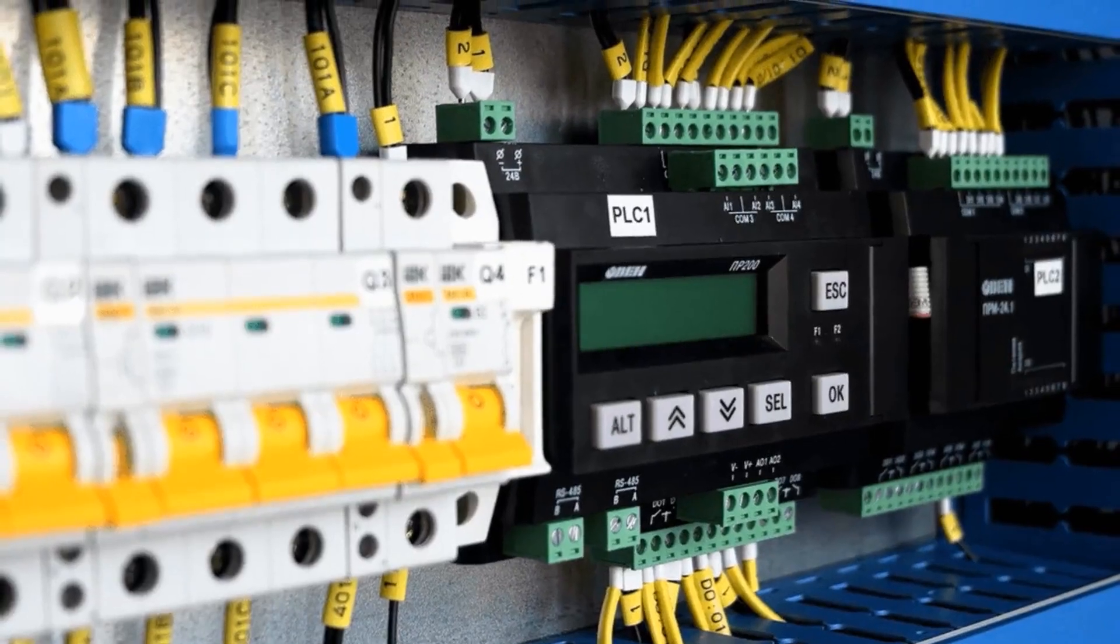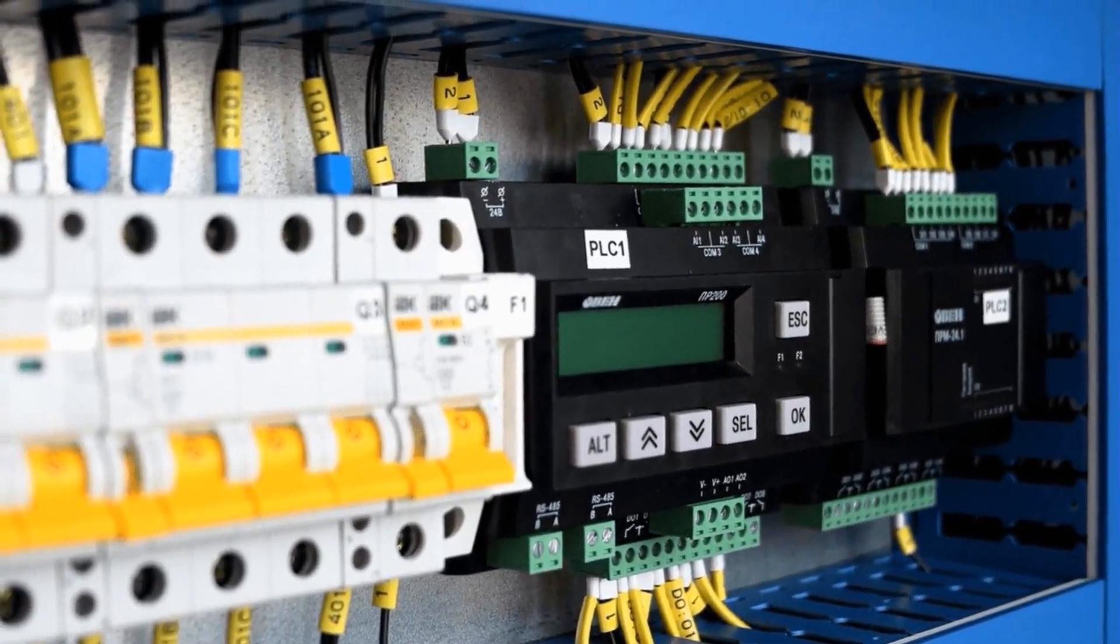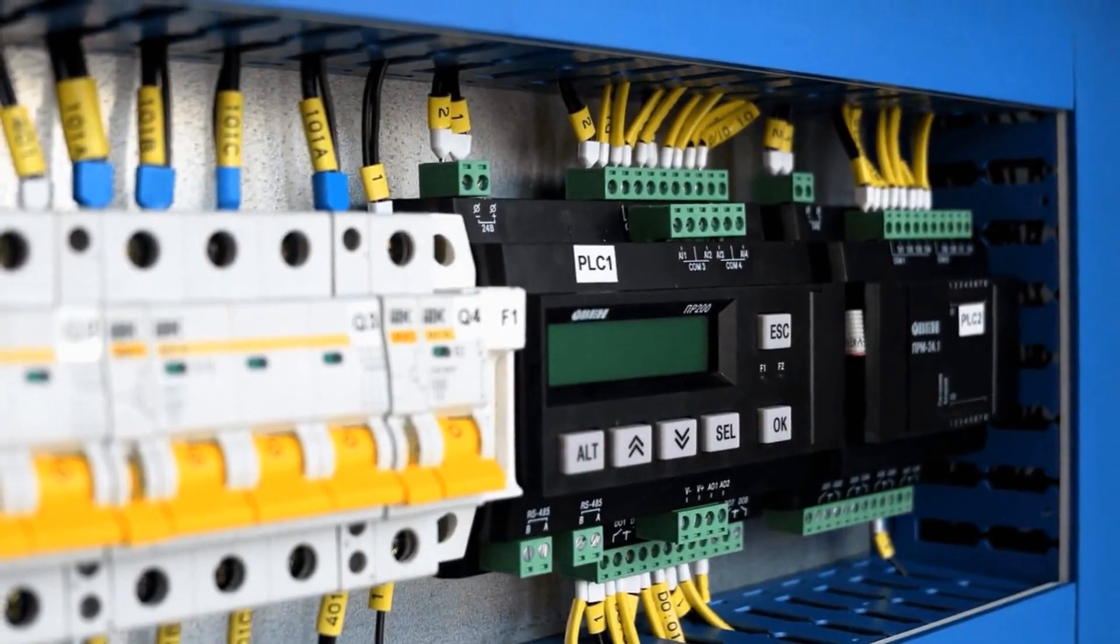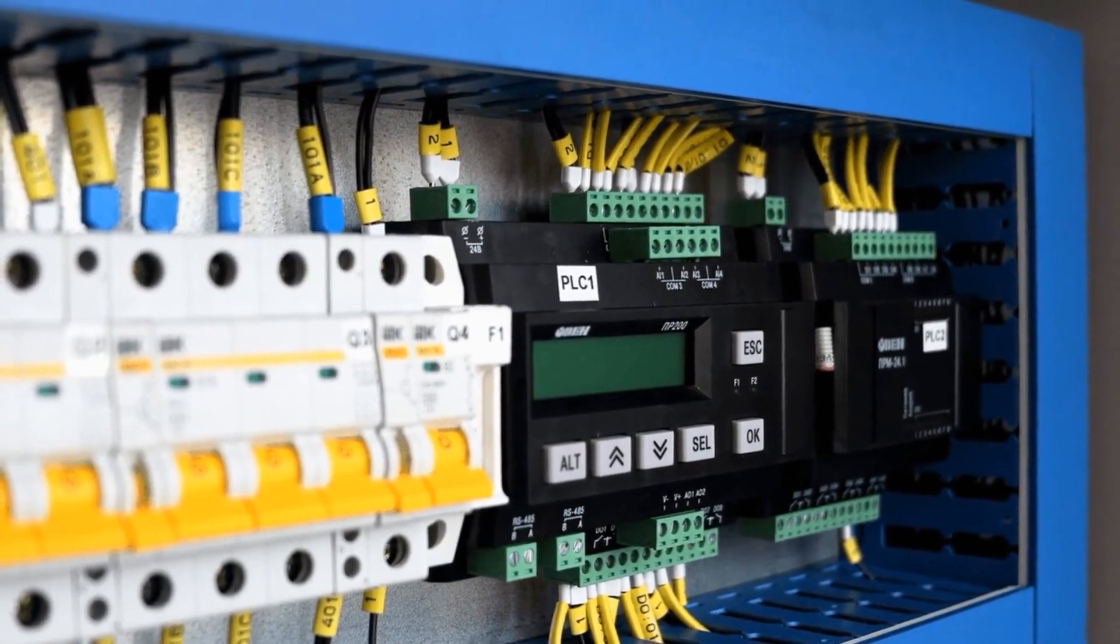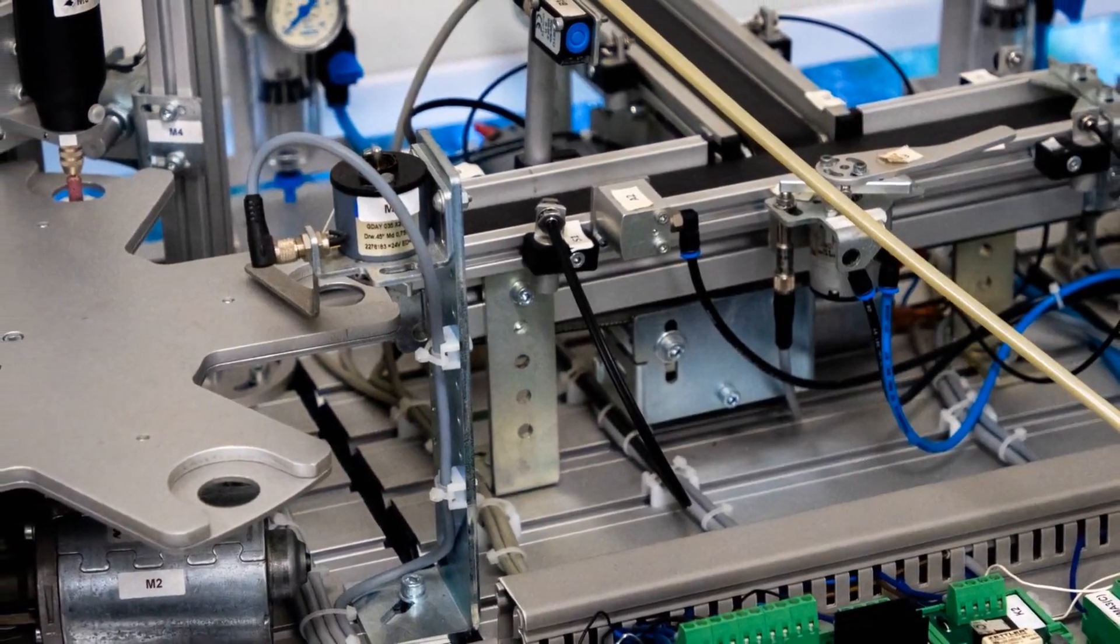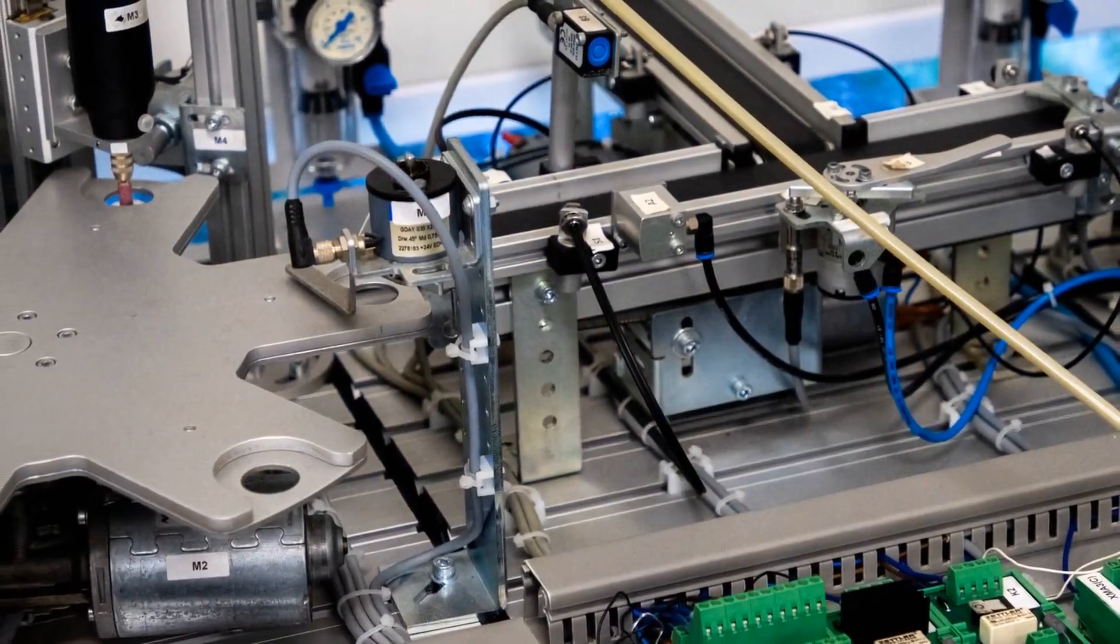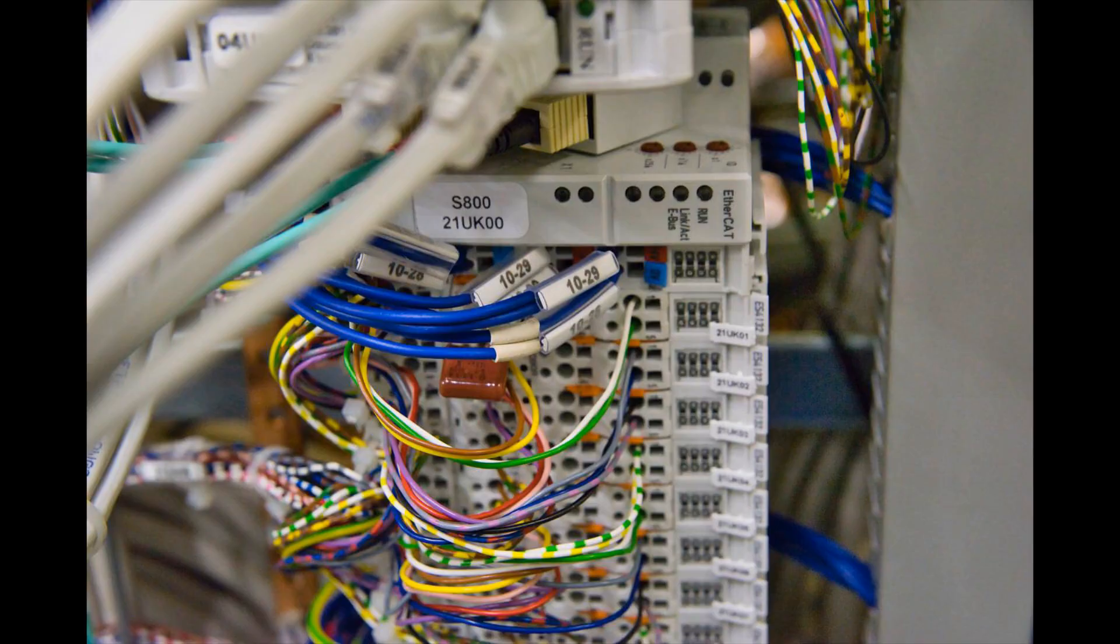Before we dive into the steps, let's quickly define what a PLC is. A Programmable Logic Controller is a digital computer used for automation of industrial processes. It's designed to control machines and processes in real time, making decisions based on input signals and pre-programmed instructions. Now, let's explore the five steps to PLC programming.